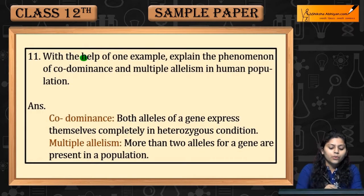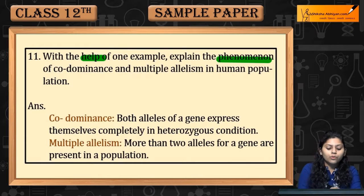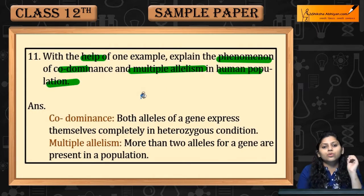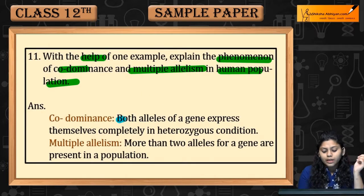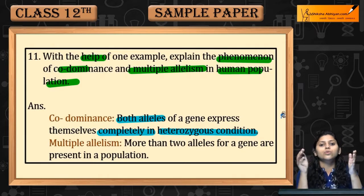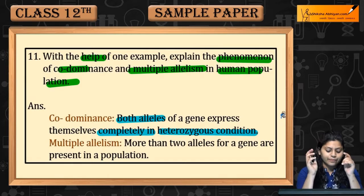Question 11: With the help of one example, explain the phenomena of Codominance and Multiple Allelism in human population. Codominance तब होता है जब both alleles of a gene express themselves completely in heterozygous condition — दोनों genes दोनों completely express करेंगे. Multiple Allelism में क्या होता है?